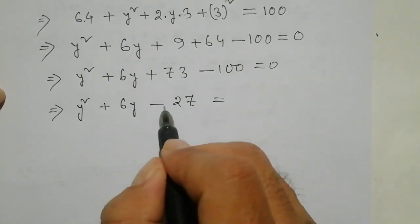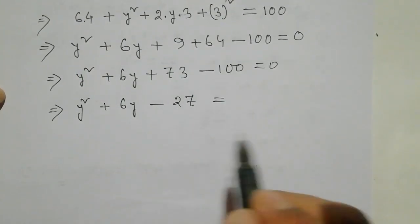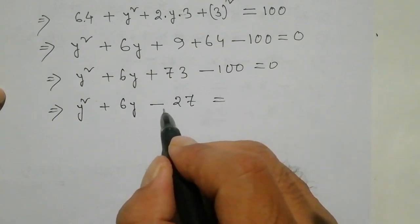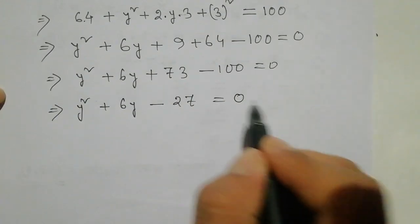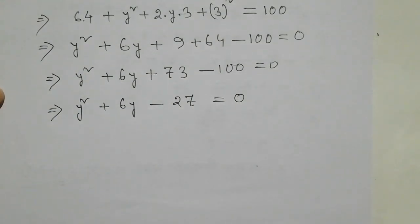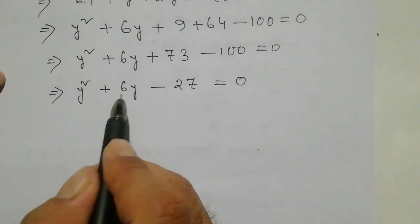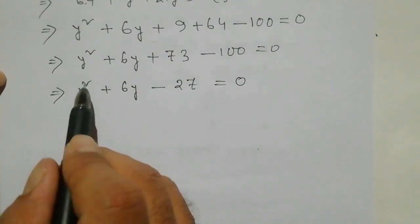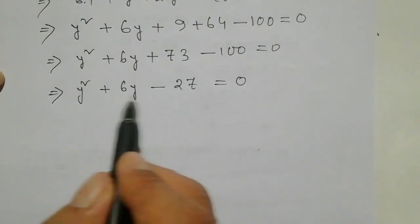Minus 27 is equal to h, equal to 13. Minus 6y, minus 27 times equals within Di1, minus. So I am 0. So I am 0. So Y squared plus 6y minus 27.